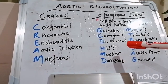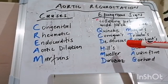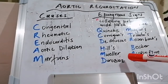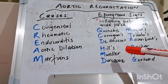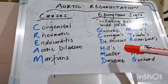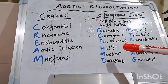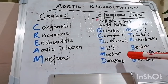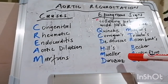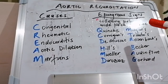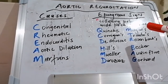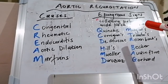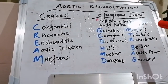Müller's sign refers to pulsation of the uvula in time with the heartbeat. Duroziez's sign refers to a systolic and diastolic murmur over the femoral artery on gradual compression of the vessel — usually you compress distally and can hear the murmurs proximally. Mayne's sign refers to a decrease in the diastolic pressure of 15 mmHg when the arm is held above the head compared to when the arm is at the level of the heart.